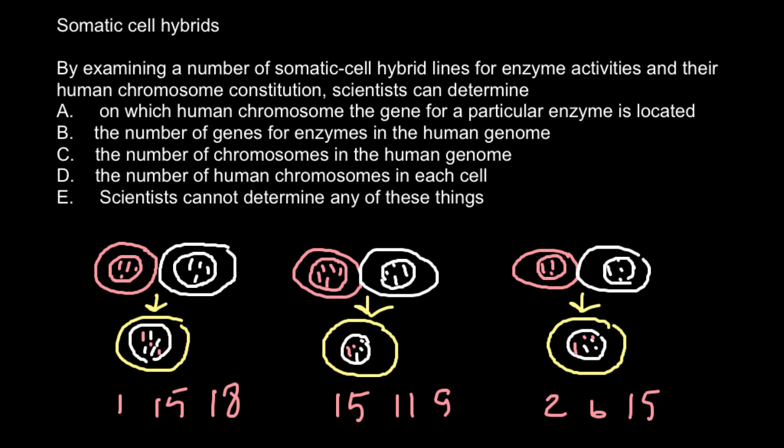And all these three lines would produce human hexa enzyme. And as you see, in these cell lines we have chromosome 1, 15, and 18, but here we don't have neither 1 nor 18 but still this enzyme would be produced. So we can eliminate the probability that this would be located on chromosome 1 and 18.